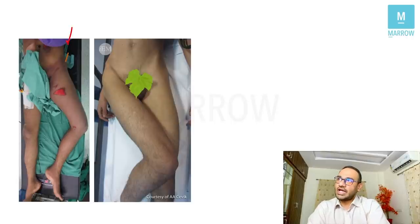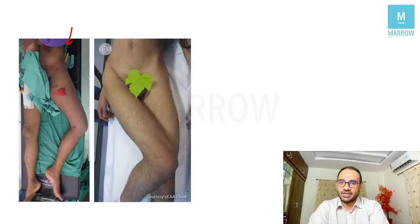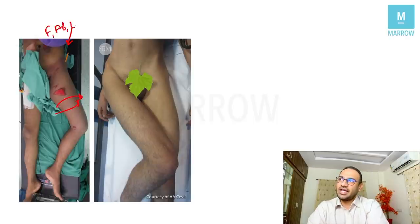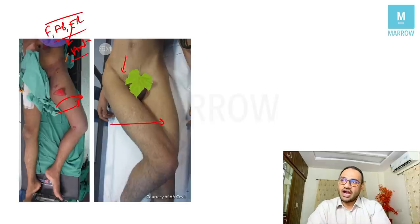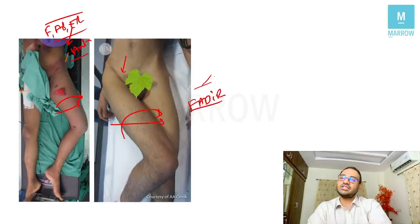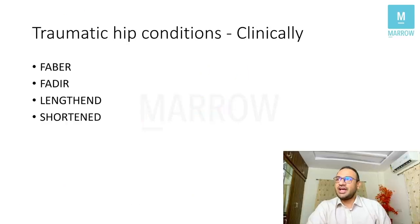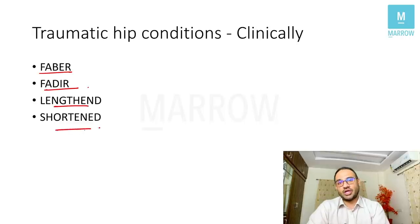Looking at the patient images: flexion, abduction, and external rotation indicates anterior dislocation of hip (FABER). Flexion, adduction, and internal rotation indicates posterior dislocation of hip (FADAIR). Please remember FABER and FADAIR, and also whether the limb is lengthened (anterior) or shortened (posterior).